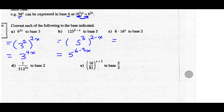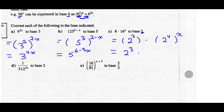Part C is a little trickier: 8 multiplied by 16 to the x. I want them as powers of base 2. 8 is the same as 2 cubed, and 16 is the same as 2 to the 4th. So rewrite 8 and 16 as powers of base 2. Now simplify: 2 cubed times 2 to the 4th, all to the exponent of x — keep our base of 2 and multiply 4 times x. Now I can simplify further because I'm multiplying powers with the same base: keep the base and add the exponents.